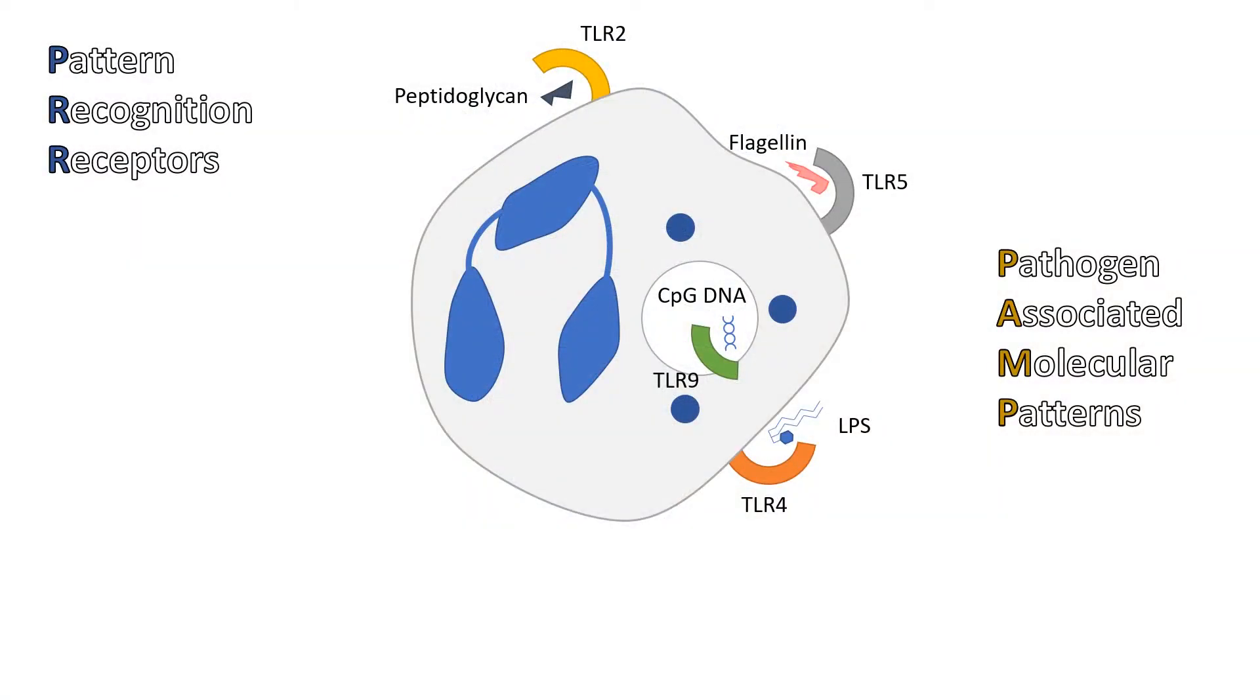These PAMPs are general and found in most pathogens, but rarely in our own cells. As such, immune cells can easily target pathogens without damaging surrounding cells.